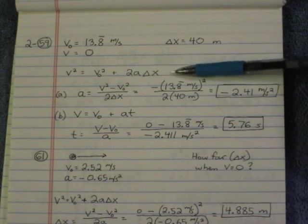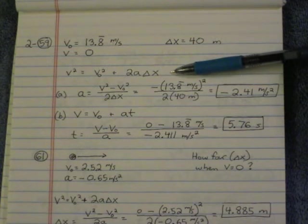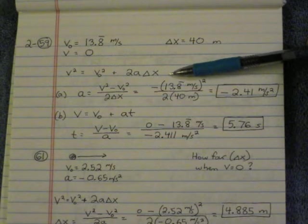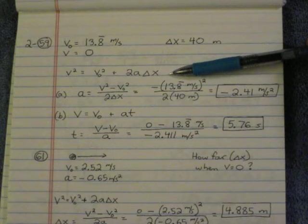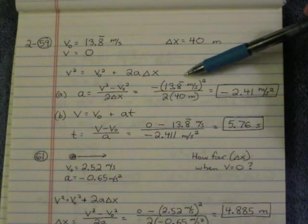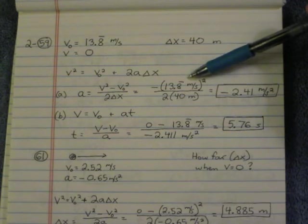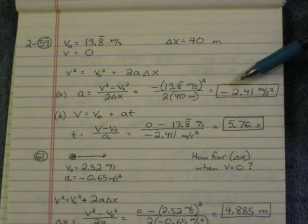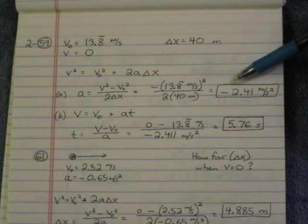So if we want to know acceleration, we'll use this kinematic equation, but we'll solve it for acceleration. So A equals V squared minus V naught squared over 2 delta x. V, in this case, is 0, so I just got rid of it when I plugged in the numbers. And you see we get an acceleration of negative 2.41 meters per second squared. Very reasonable. That's just a fraction of what acceleration due to gravity is.